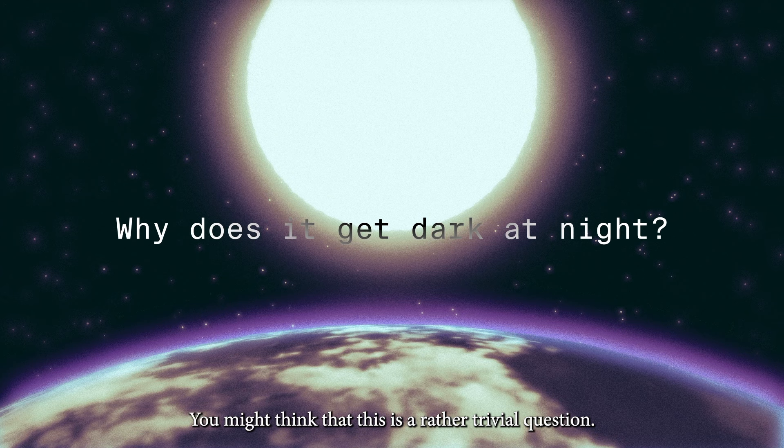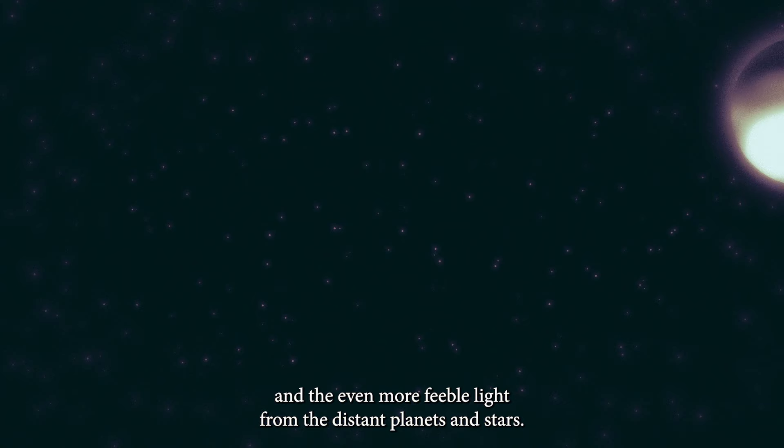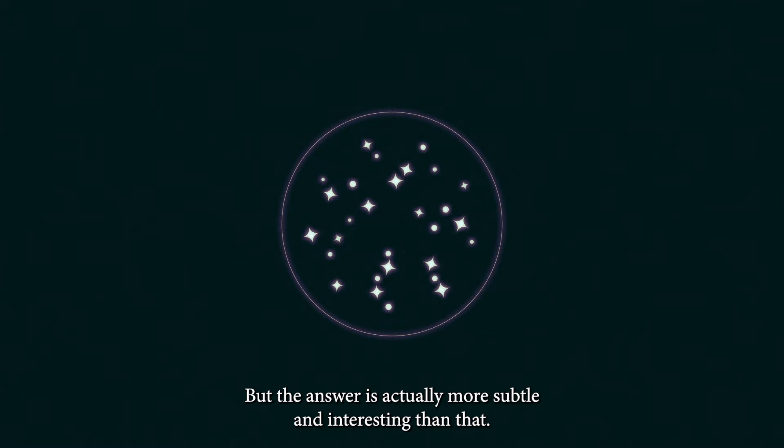Why does it get dark at night? You might think that this is a rather trivial question. Surely when the sun goes down, we have to make do with the feeble reflected light from the moon, and the even more feeble light from the distant planets and stars. But the answer is actually more subtle and interesting than that.